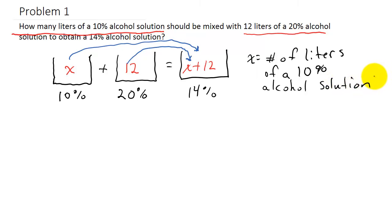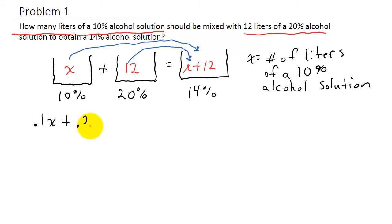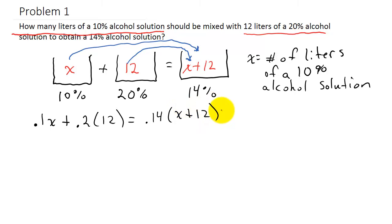Now let's set up our equation. We've got 10% of X liters, so that's 0.1 times X — converting 10% to a decimal. Plus 20% of 12 liters, so that's 0.2 times 12. And then we have 14% of the total, so that's 0.14 times (X plus 12).